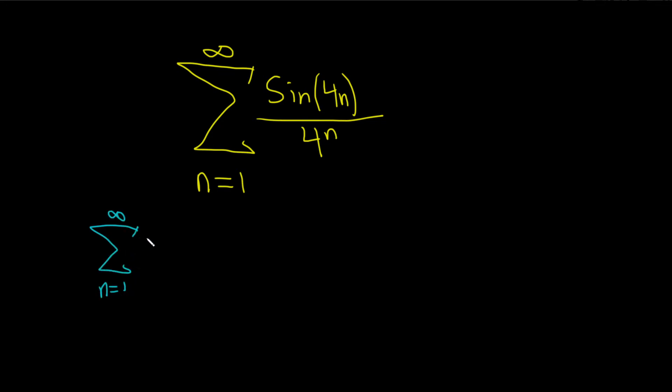So we'll take the absolute value of the sine of 4n, and this is all over 4 to the n. And we want to see if this new series converges. So if this converges, then we say the series converges absolutely.